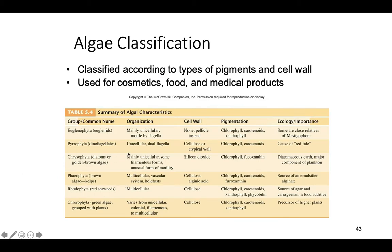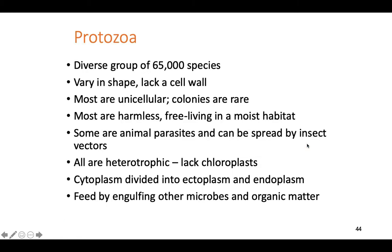There are different classifications of algae — you can see how they're organized by whether they have a cell wall, what it's made of, what color they are, and their role in the environment. Protozoans are very diverse — about 65,000 species. They lack cell walls, which is one of the defining characteristics. Most are unicellular, and colonies are pretty rare. The vast majority are harmless, living in wet or moist environments.